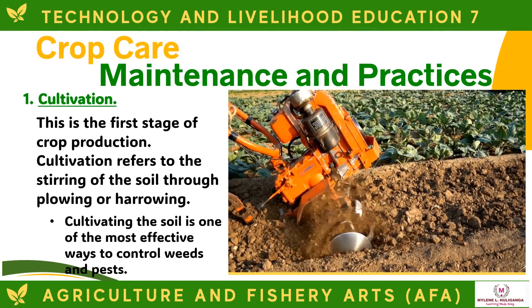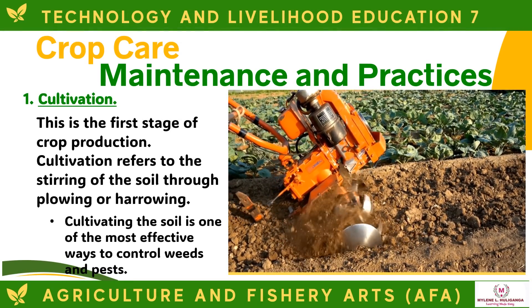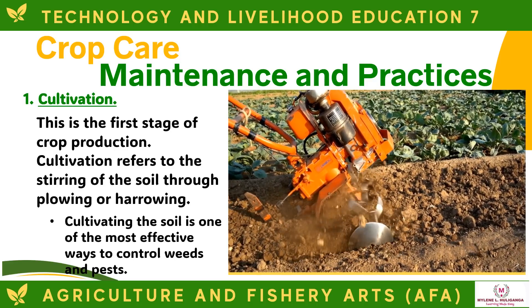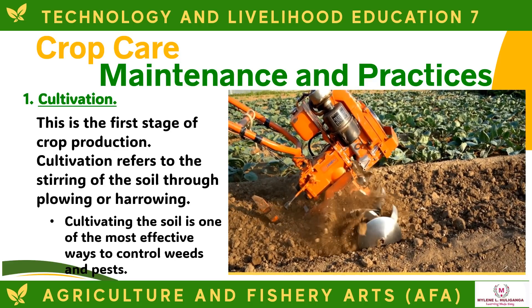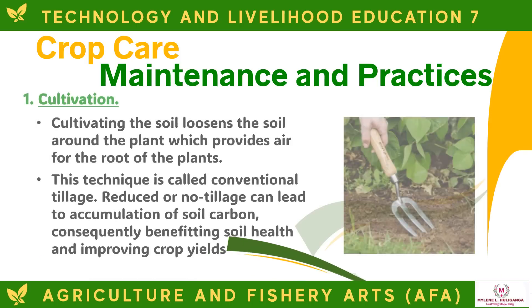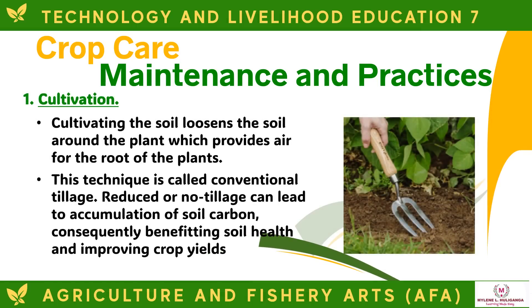The first crop care and maintenance process is cultivation — the first stage of crop production. Cultivation refers to the stirring of the soil through plowing or harrowing and is one of the most effective ways to control weeds and pests. Cultivating the soil loosens it around the plant, providing air for the roots. This technique is called conventional tillage. Reduced or no tillage can lead to accumulation of soil carbon, benefiting soil health and improving crop yields.